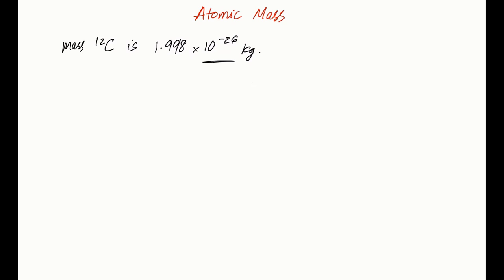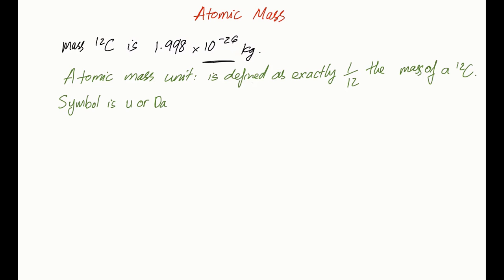So that's why chemists developed a unit called the atomic mass unit. The atomic mass unit is defined as exactly a 12th the mass of a carbon-12 atom. The symbol that you usually see will be either U or DA, called Dalton.